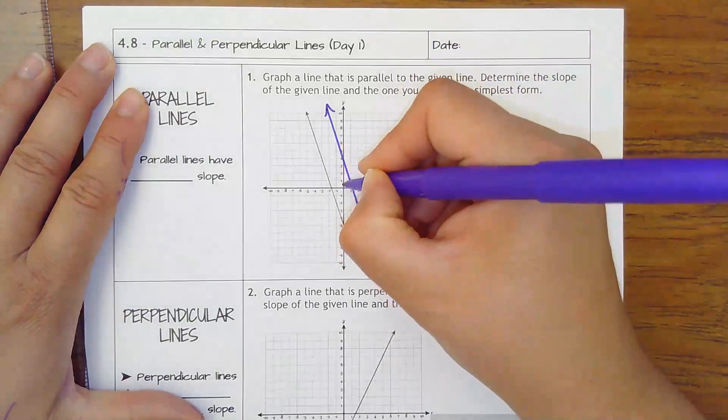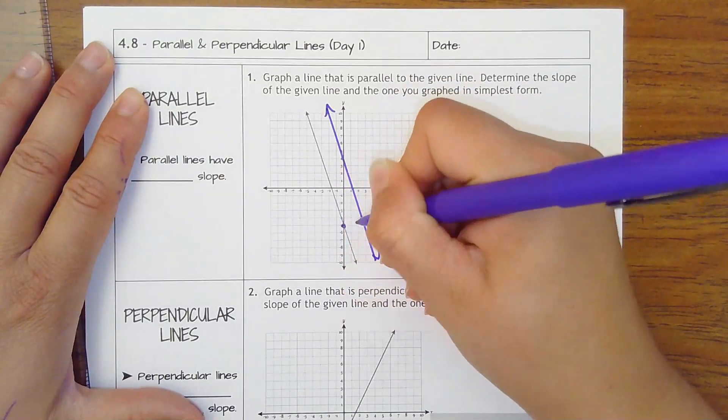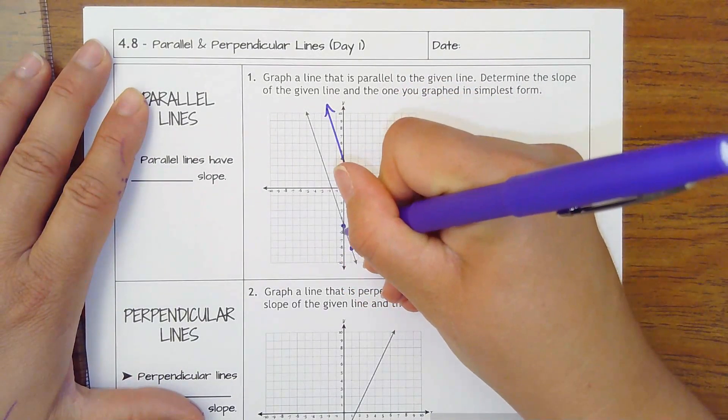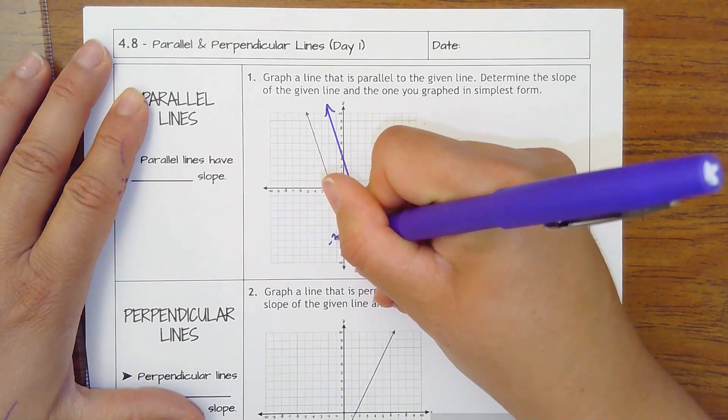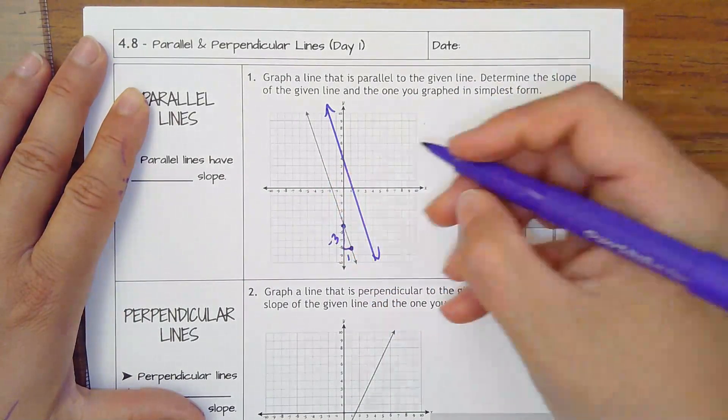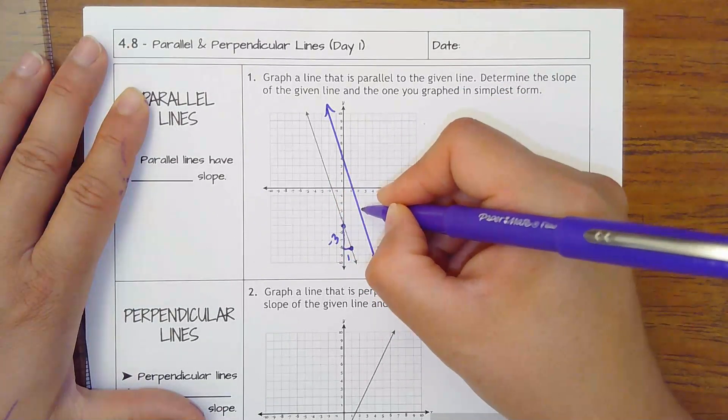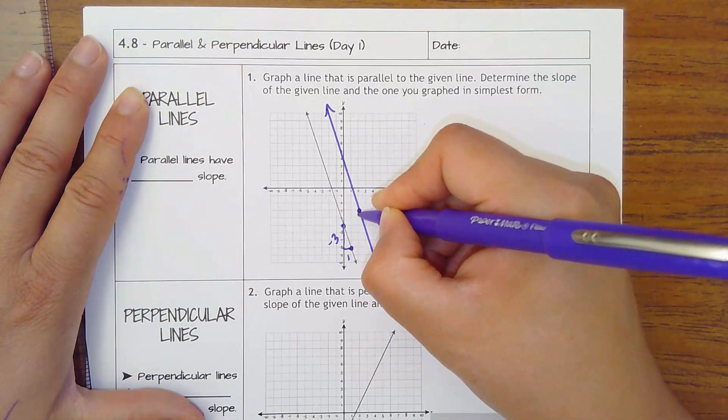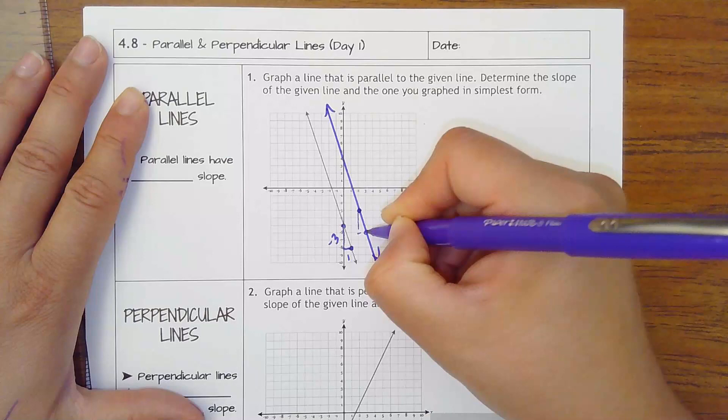Slope of the original line. Here's my y-intercept. Find another point. Goes down 1, 2, 3, right 1. So that would be a slope of negative 3. My line should be down 1, 2, 3, right 1 as well.